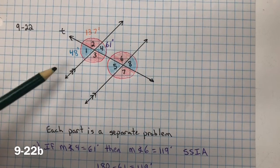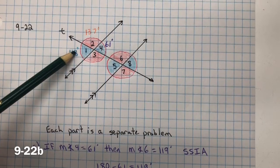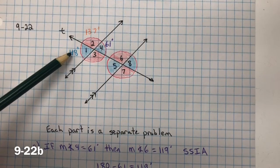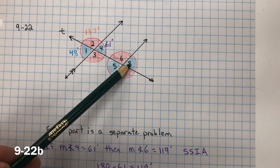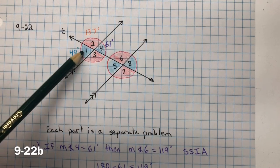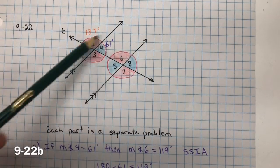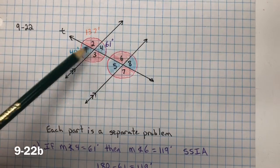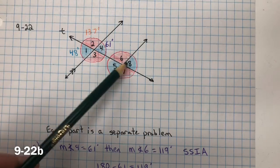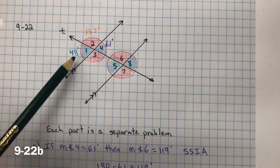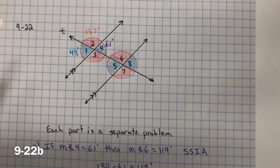For part B, measure of angle 1 equals 48 degrees, and we have to find the measure of angle 8. They're the same color, and they're also alternate exterior. They're outside of the parallel line, so they're alternate exterior angles. And those are congruent angles. They're both blue, they're the same color, so they're equal to each other. So the measure of angle 8 will be 48 degrees.